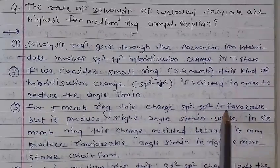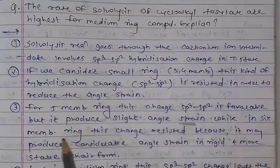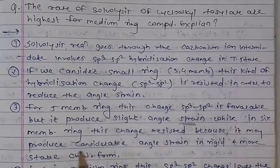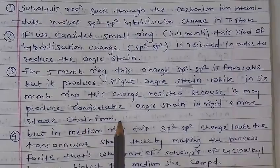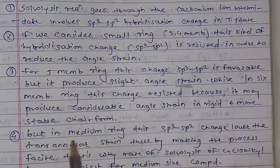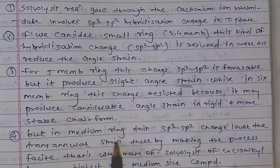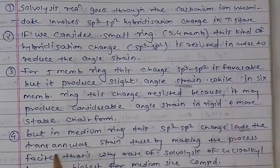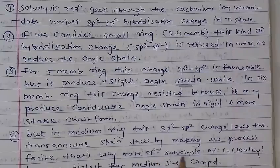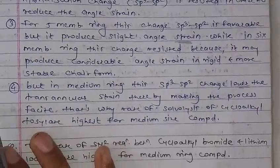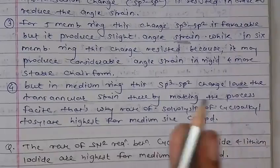The 5-membered ring is favorable but produces slightly increased angle strain. It may produce considerable strain, and the 6-membered ring is more stable in the chair form. The medium ring has lower transannular strain, therefore the ring-making process is favorable. The rate of solvolysis of cycloalkyl systems is the highest for the medium-sized compound.